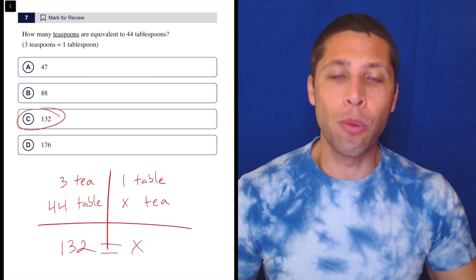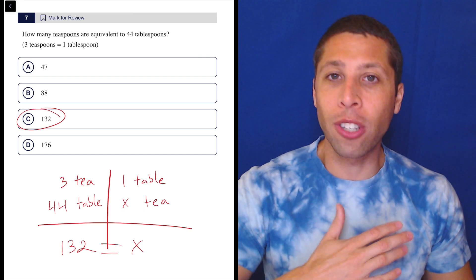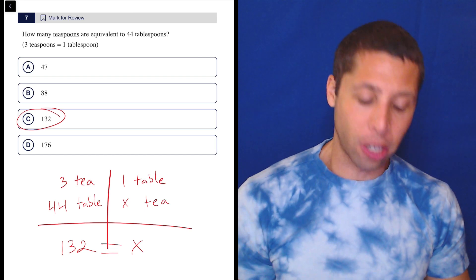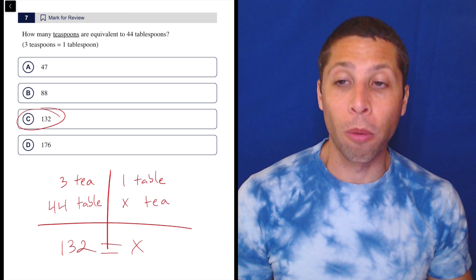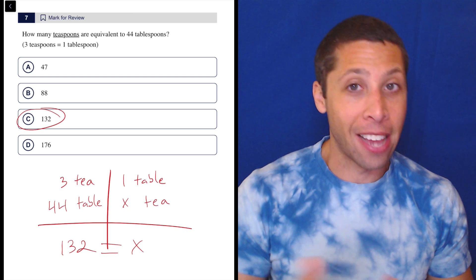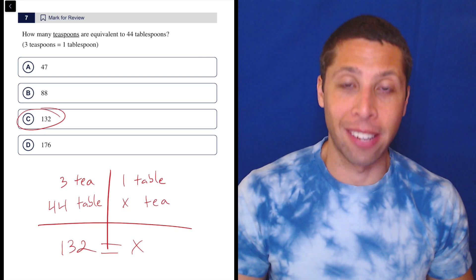You get an answer that's not an answer and then you waste a ton of time. So you're better off just making it automatic that you're gonna write something like this on scratch paper so you don't mess up. It's really easy. It's worth the five seconds that it takes.